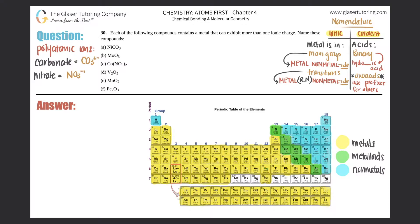Number 30. Each of the following compounds contains a metal that can exhibit more than one ionic charge. Name these compounds. We did a very similar question at number 29, so if you need more practice you could always go back to that one. But let's start now.